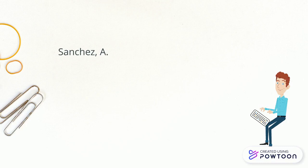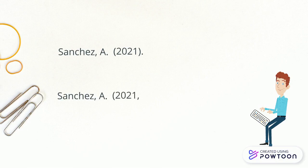Next, add the publication year in parentheses and then place a period. If you're citing a scholarly article, you usually only need the year. If you're citing a magazine or newspaper article, add a comma and then the month or month and day of publication.